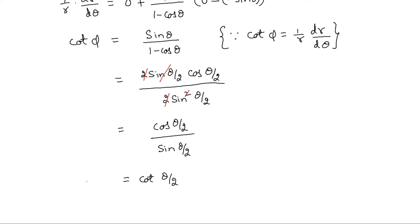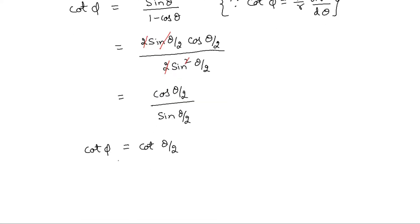On the left-hand side we have cot φ, and on the right-hand side we have cot(θ/2). Since cot φ = cot(θ/2), this equality is satisfied only when φ = θ/2. Here φ is the angle between the radius vector and the tangent, so that is the required solution.